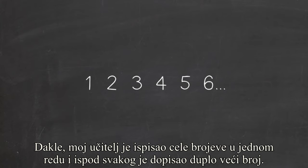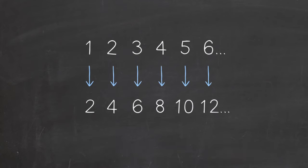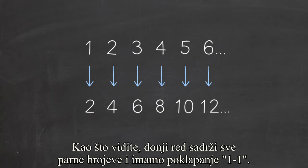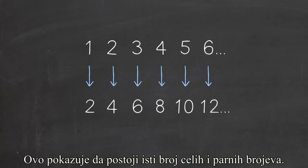So my fourth grade teacher showed us the whole numbers laid out in a row, and below each we have its double. As you can see, the bottom row contains all the even numbers, and we have a one-to-one match. That is, there are as many even numbers as there are numbers.